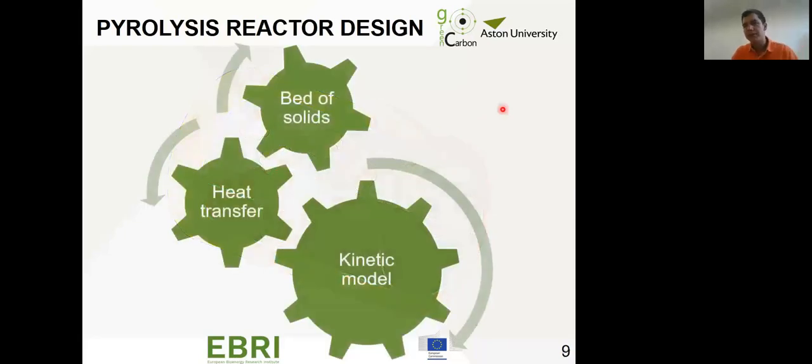This reactor is a cylindrical shell, normally stainless steel, rotating and heated externally by some source of energy. It can be combustion gases from burning the gases we obtain inside, burning biomass, external fuel, electric heating, or firing directly the reactor because we cannot fire inside due to the absence of oxygen. During my design I took into account three main parts: the bed of solids, how it's heating up, and the kinetic model. In any chemical reactor, the kinetic part is crucial, and that's what I'm going to explain today.